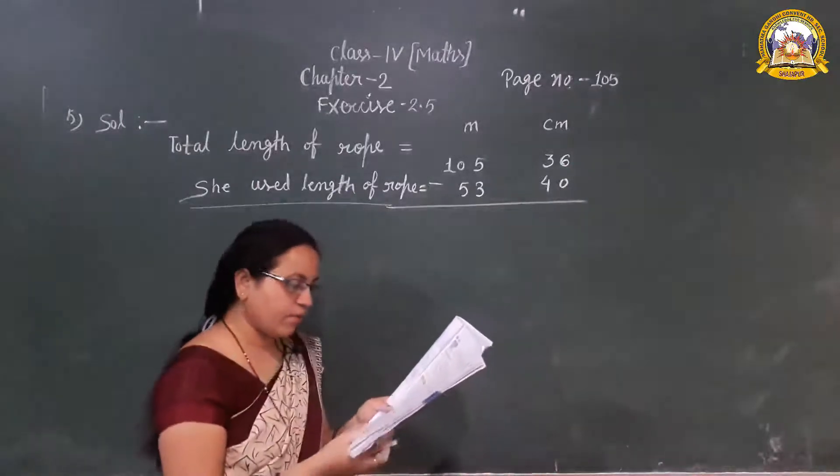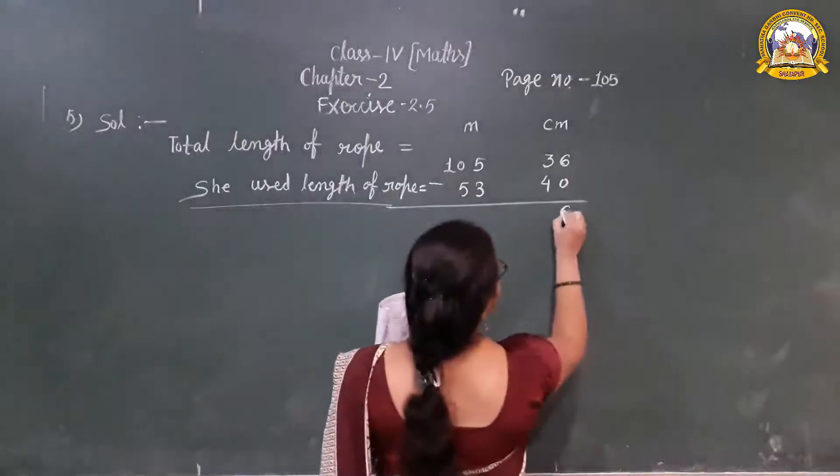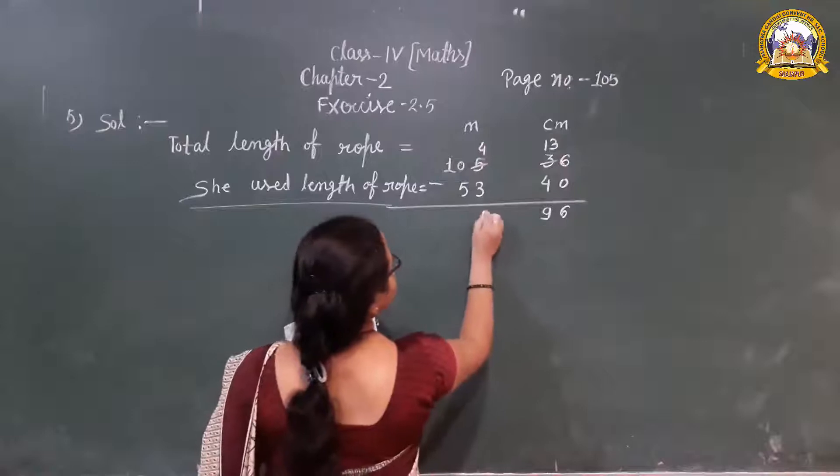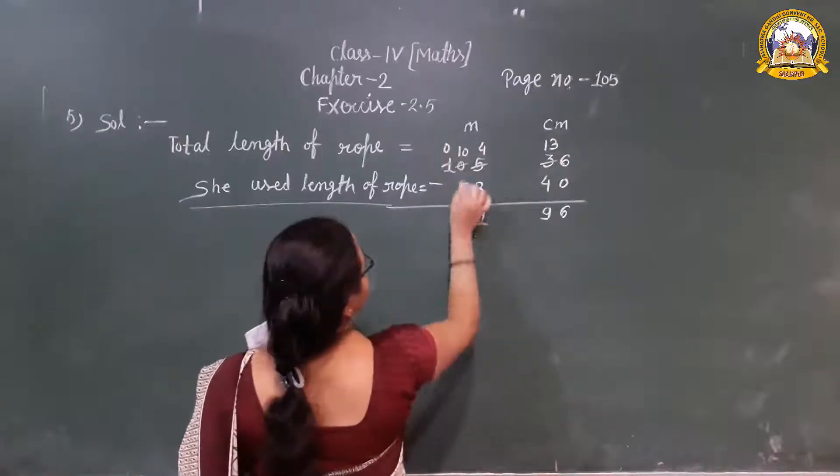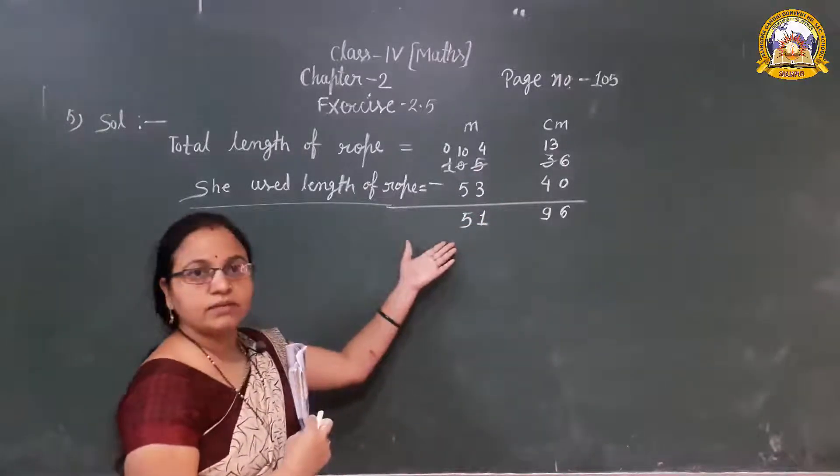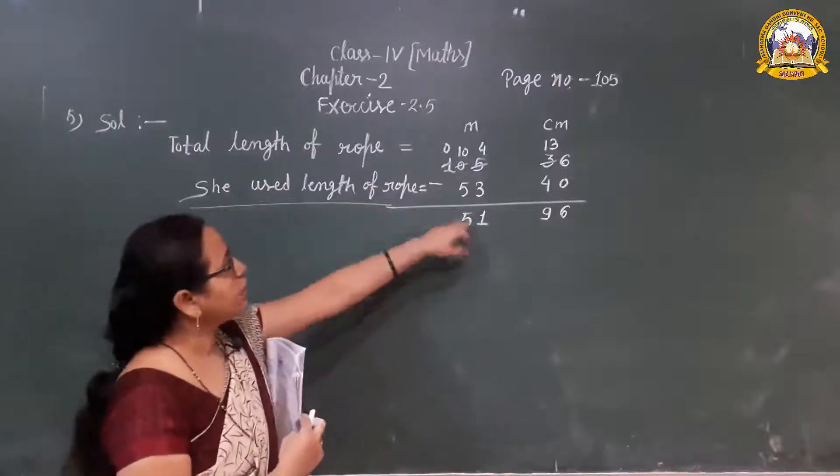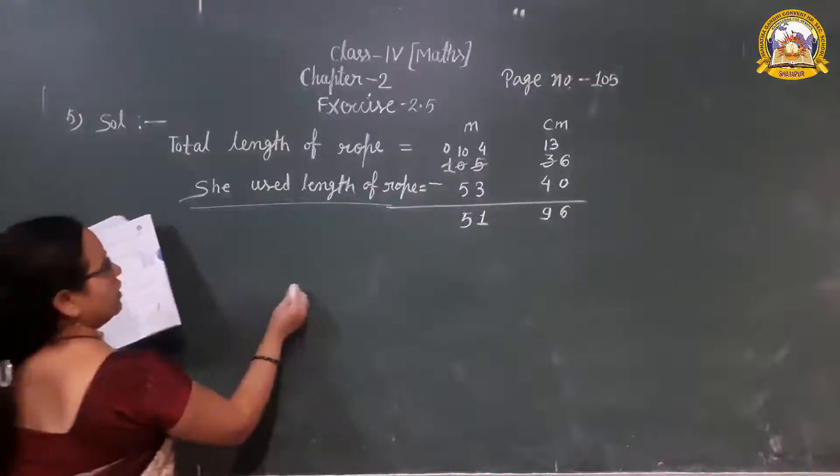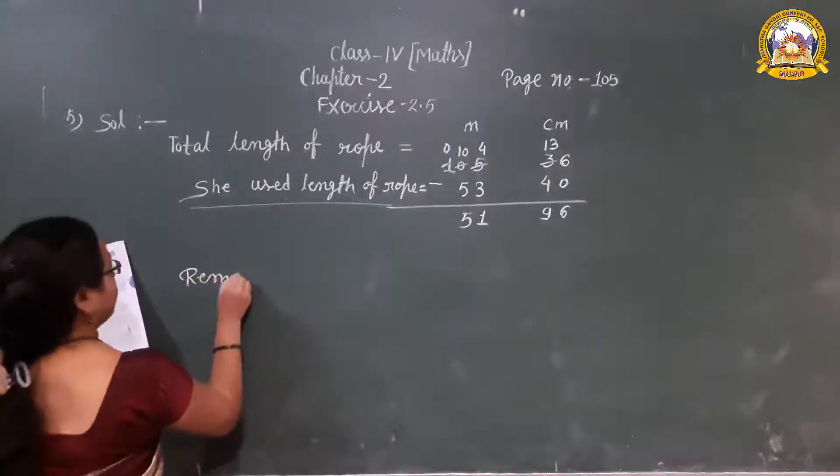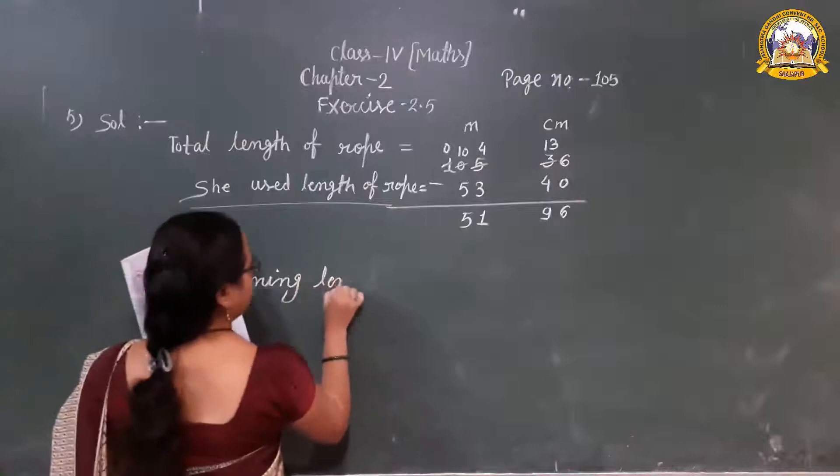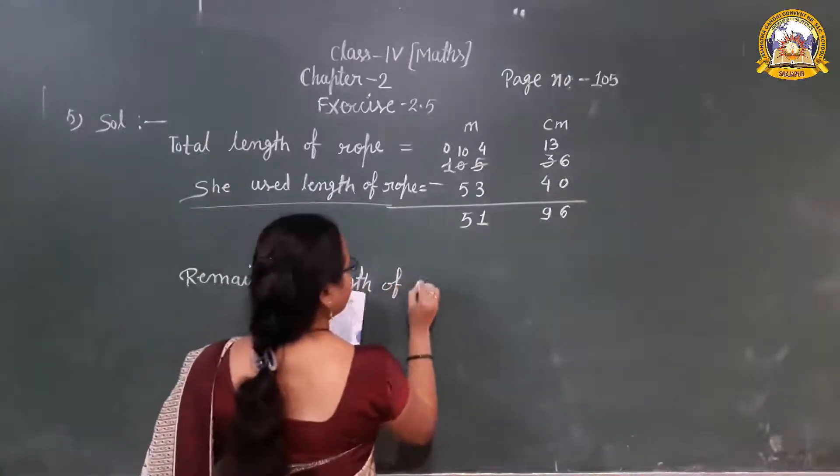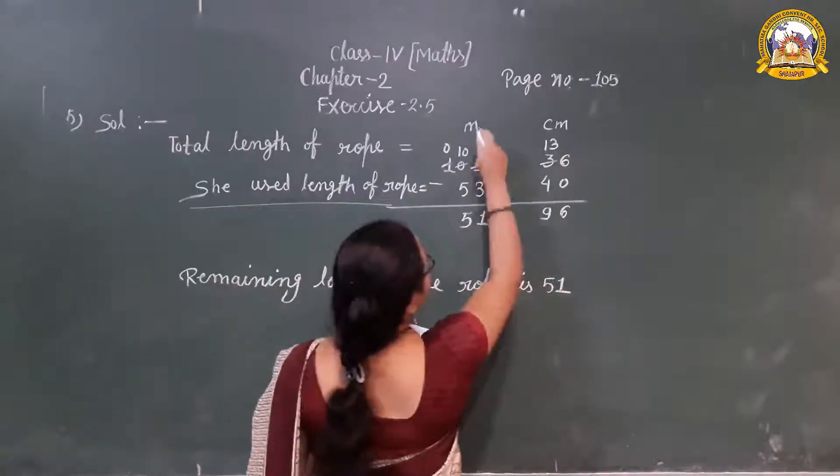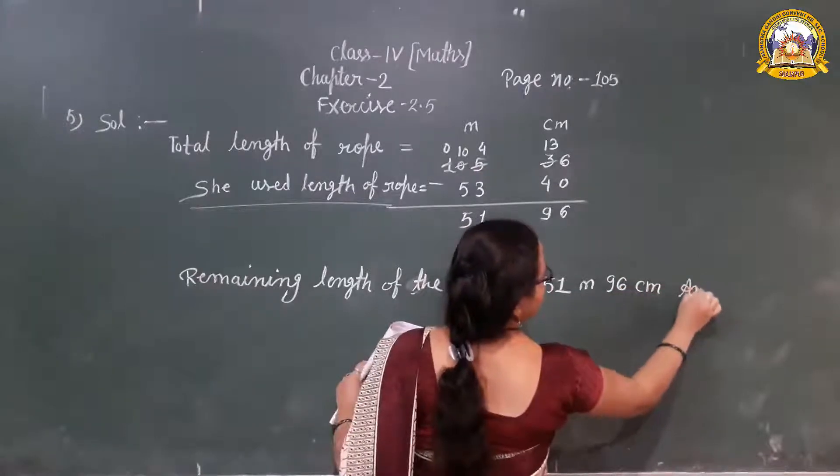What is asking there? Find the remaining length of the rope. 6 is 13 minus 4 is 9. Here is remaining 4, 4 minus 3 is 1. 10 minus 5 is 5. So how much portion of the rope is remaining there? 51 meter 96 cm. So we can write this answer. Remaining length of the rope is 51 meter 96 cm.